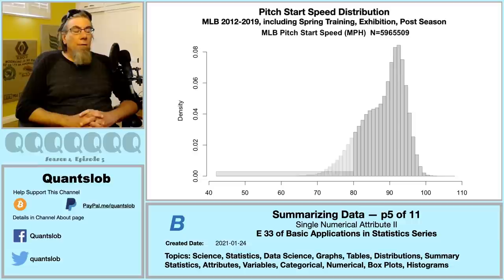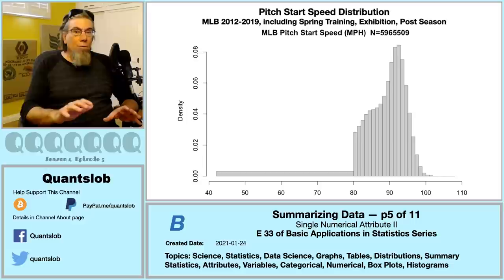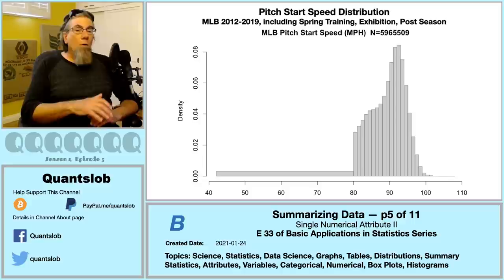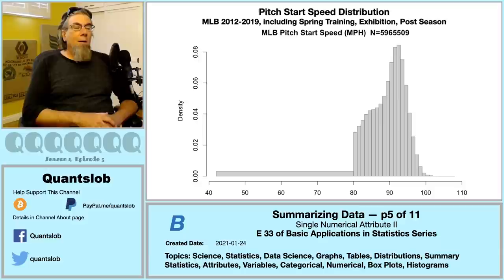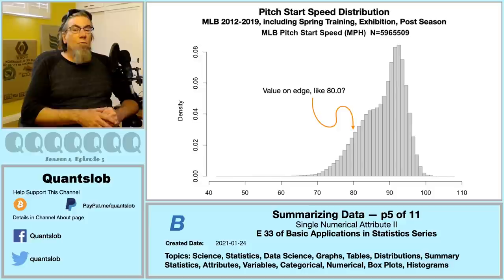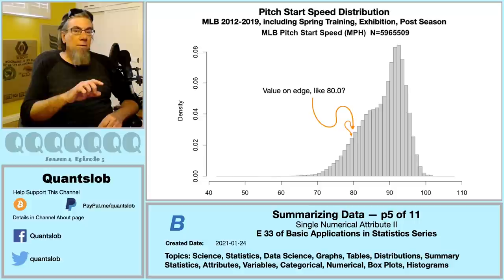Must all bins have the same width? Technically no. When expressing popularity as density — and only when using density — we may occasionally encounter a histogram with unequal bin intervals. The areas of the bars still sum to one, but if you're producing the histogram I would advise against this. Just keep the bins of equal width. What happens if a value lands directly on the edge between two bins? The software will impose a rule — like 'fall left,' placing the observation in the bin to the left, or 'fall right.'